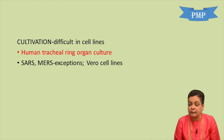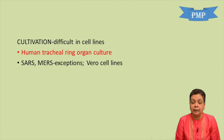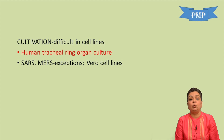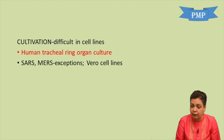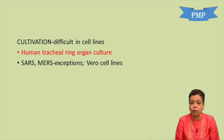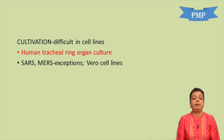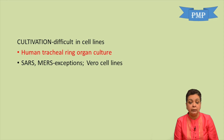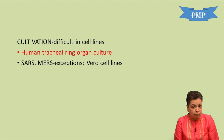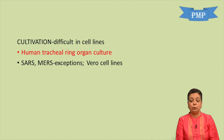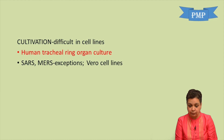Cultivation of coronaviruses is very difficult. They grow only on organ cultures derived from tracheal rings — specifically, human tracheal ring organ cultures. Exceptions to this are SARS and MERS, which can be easily grown on viral cell lines.